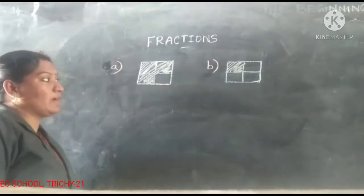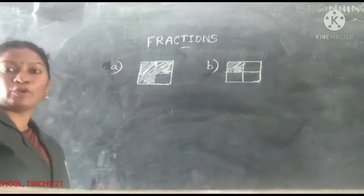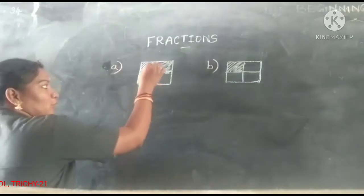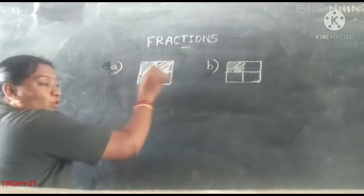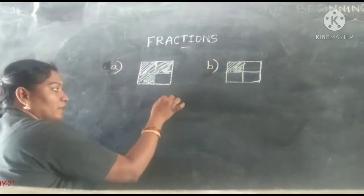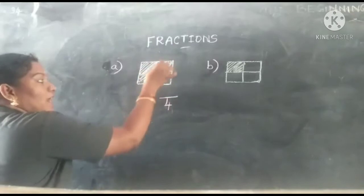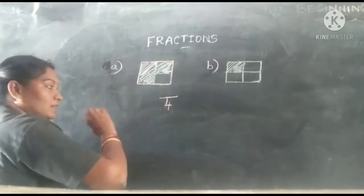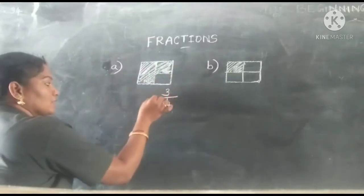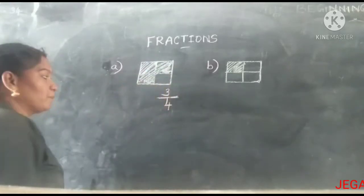Now compare the next fractions and say which one is smaller. First, make a fraction for the figure. Counting the equal parts: 1, 2, 3, 4 — so 4 equal parts, meaning the denominator is 4. Three parts are shaded, so the numerator is 3. This fraction represents figure 1.